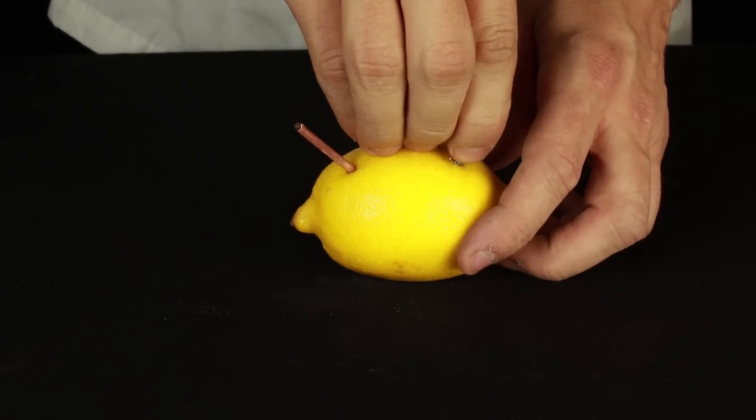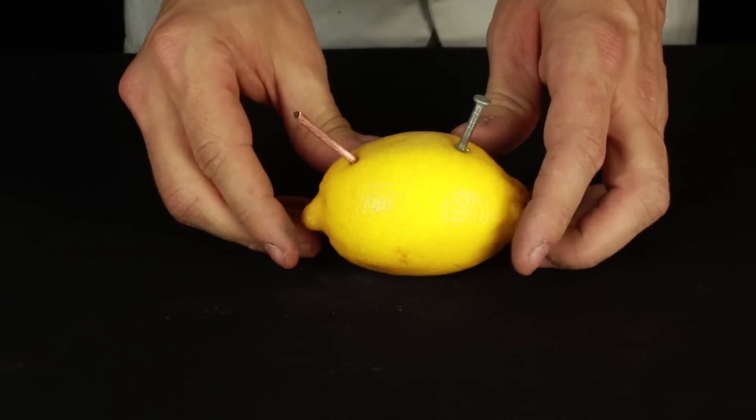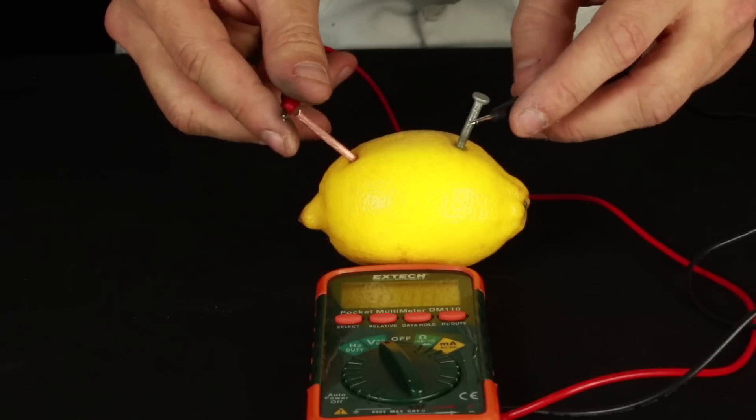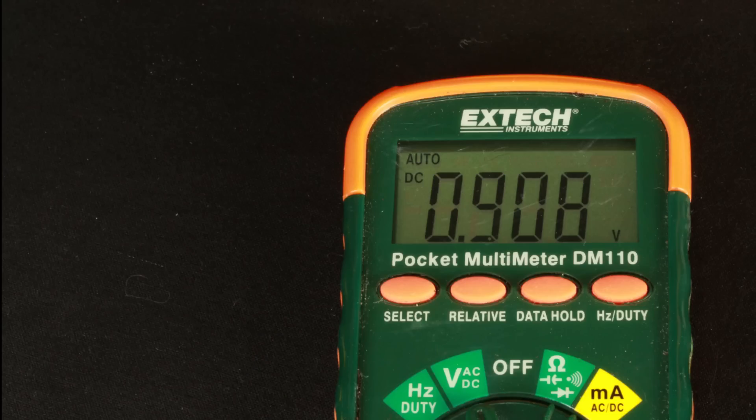Make sure that they don't touch each other inside the lemon. These pieces of metal create the positive and negative terminals to your battery and when connected to a meter will put out just under one volt of electric potential.